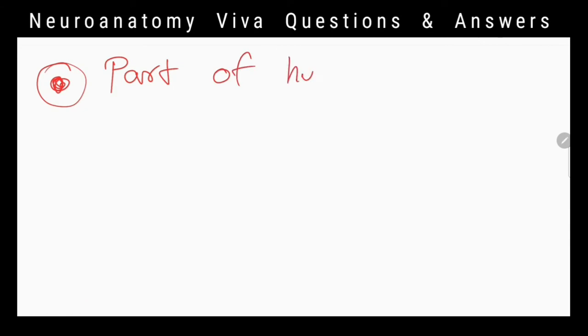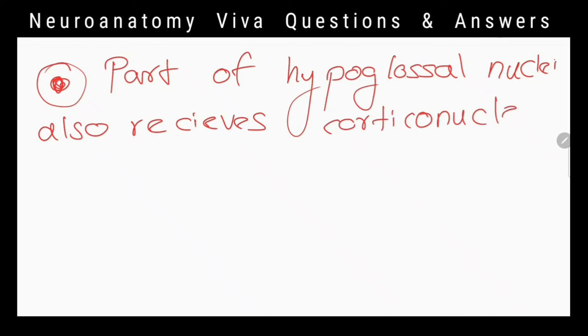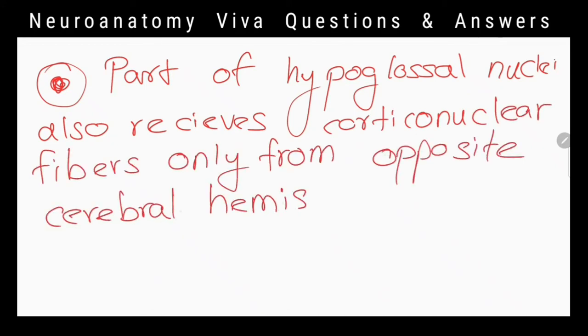What is the other cranial nerve nucleus which has a part that receives corticonuclear fibers only from opposite cerebral hemisphere? Hypoglossal nerve.